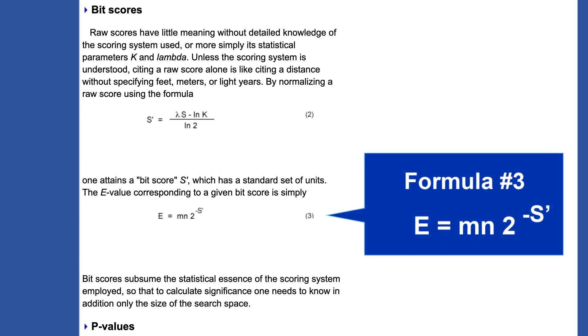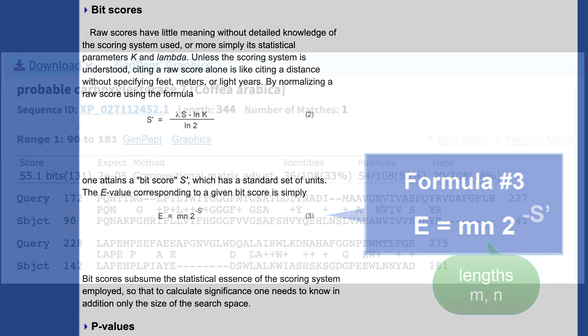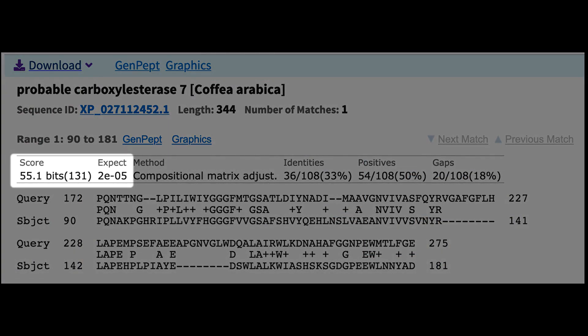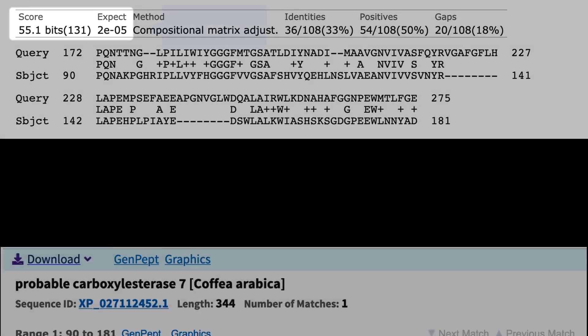formula number three states that E-Values are proportional to the product of the query and database lengths. The practical implication is that E-Values cannot be directly compared when searching databases of different sizes.